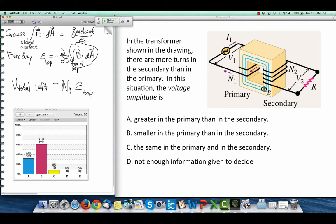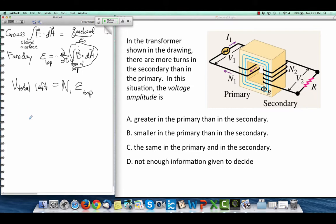And so the number of loops tells you the total EMF. And so the answer that had the biggest number, that it's smaller in the primary than the secondary. This is a transformer that turns low voltages into large volts, small voltages into big voltages. So B was the answer I was looking for there.